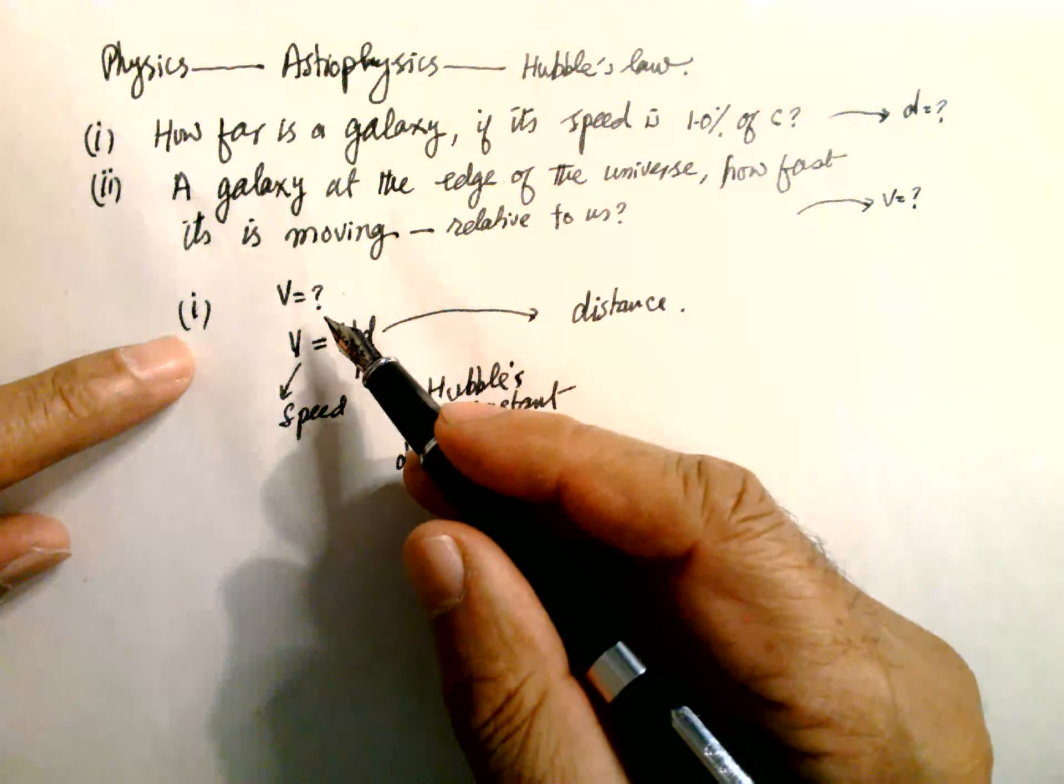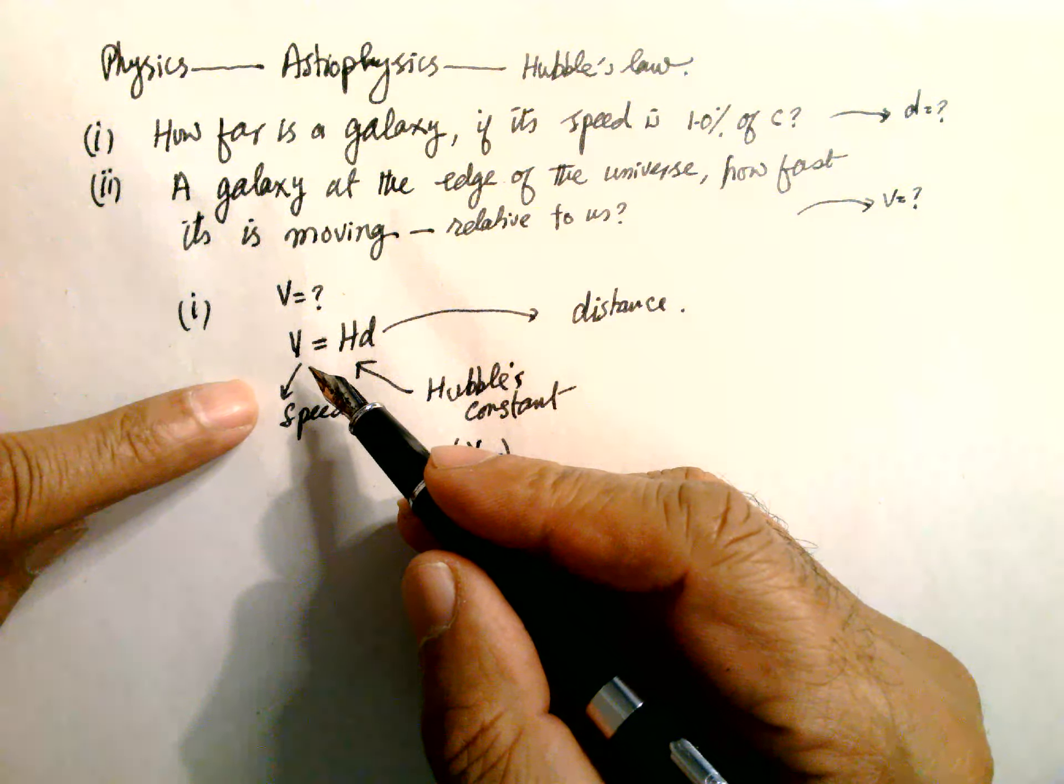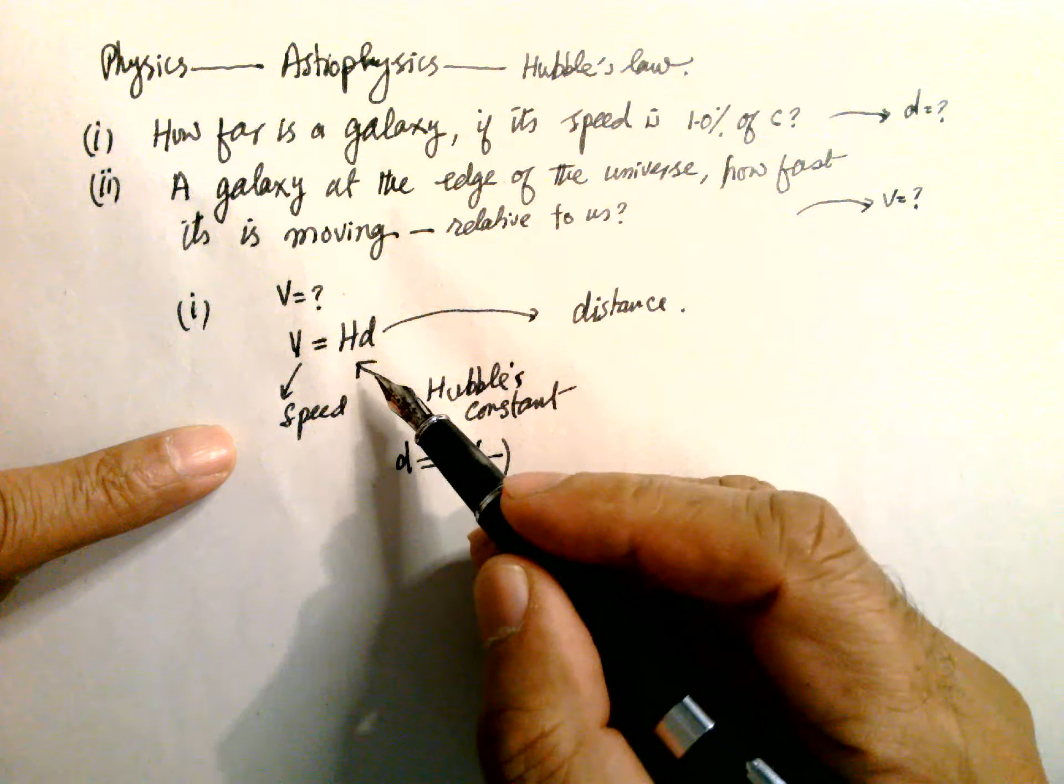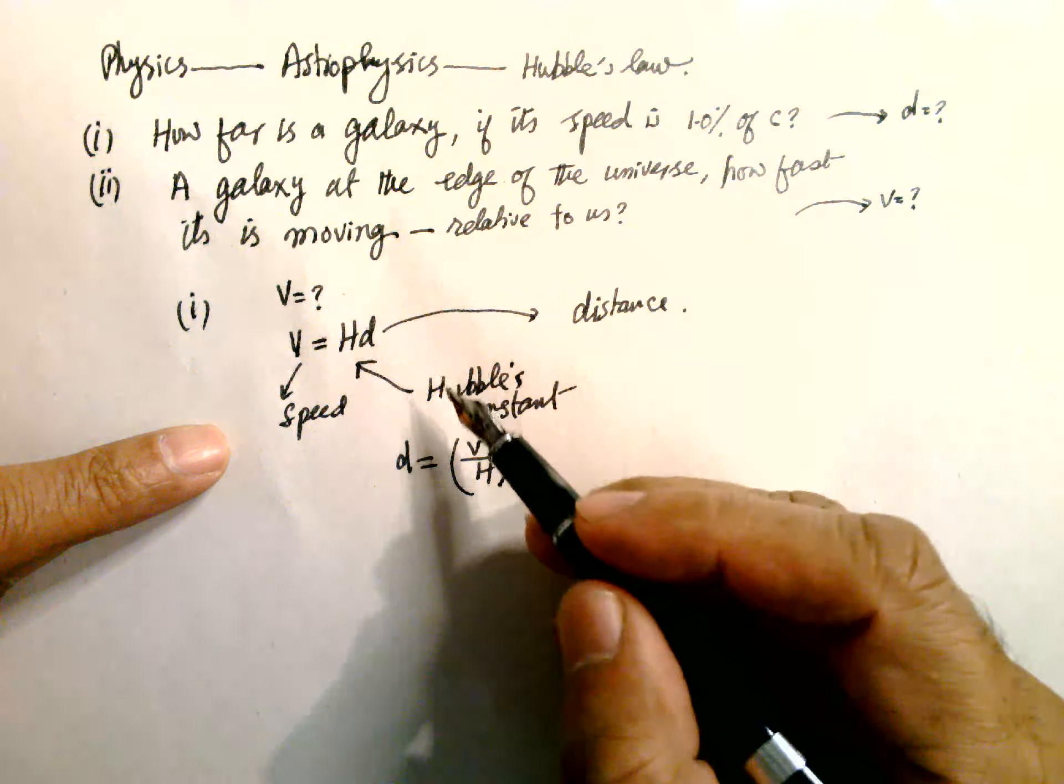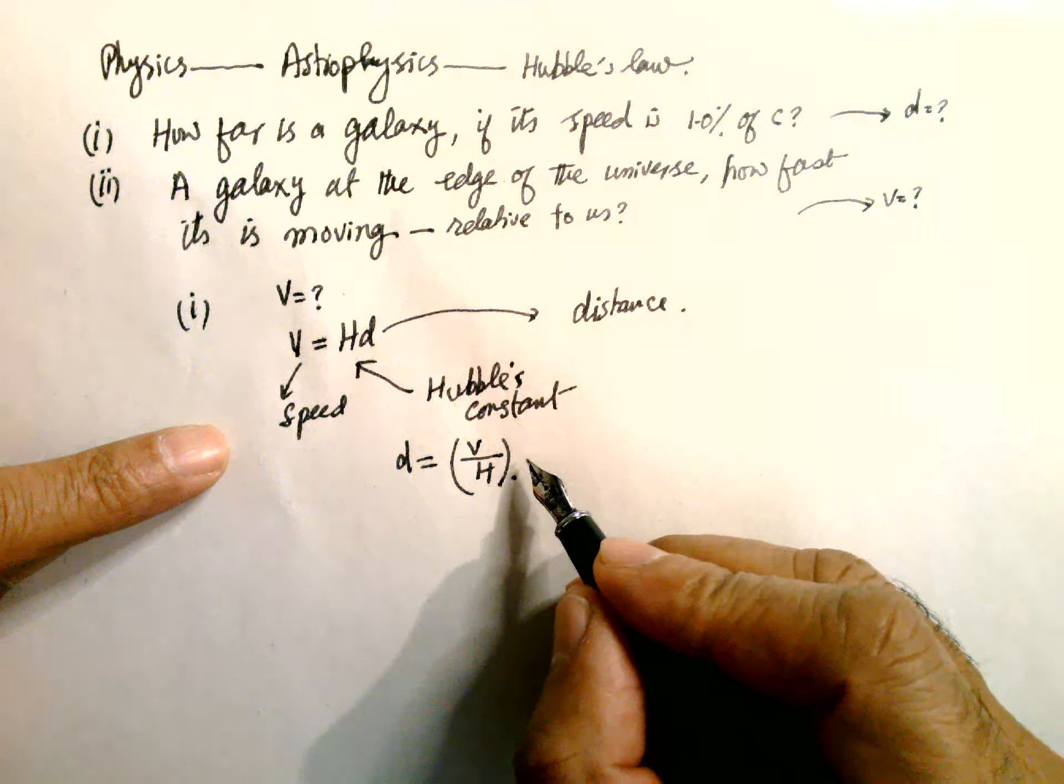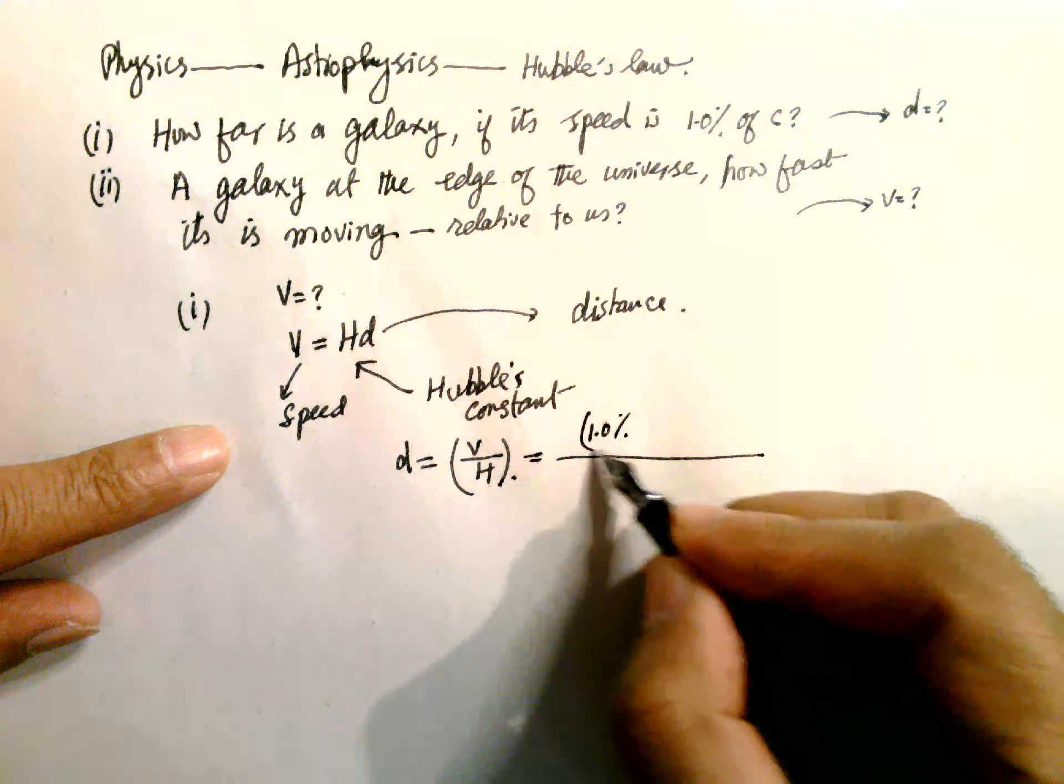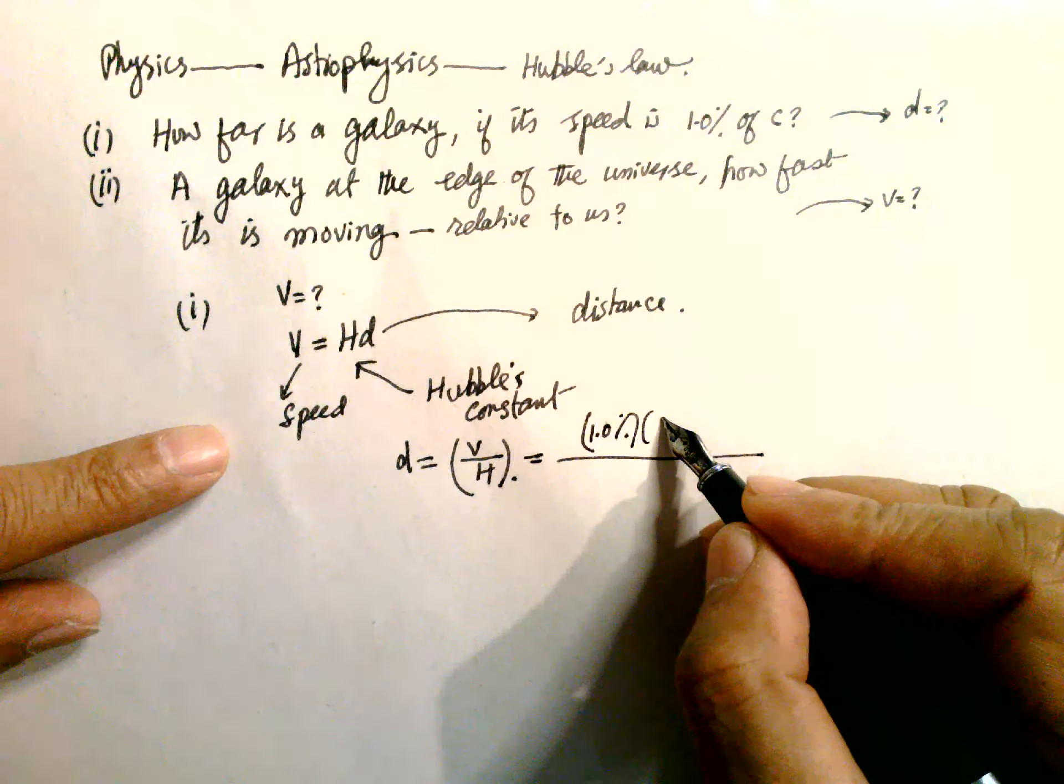So for the first part, we're given speed and use Hubble's Law. V equals HD, where V is speed, H is Hubble's constant, and D is distance. So D equals V over H. V is 1% of speed of light,